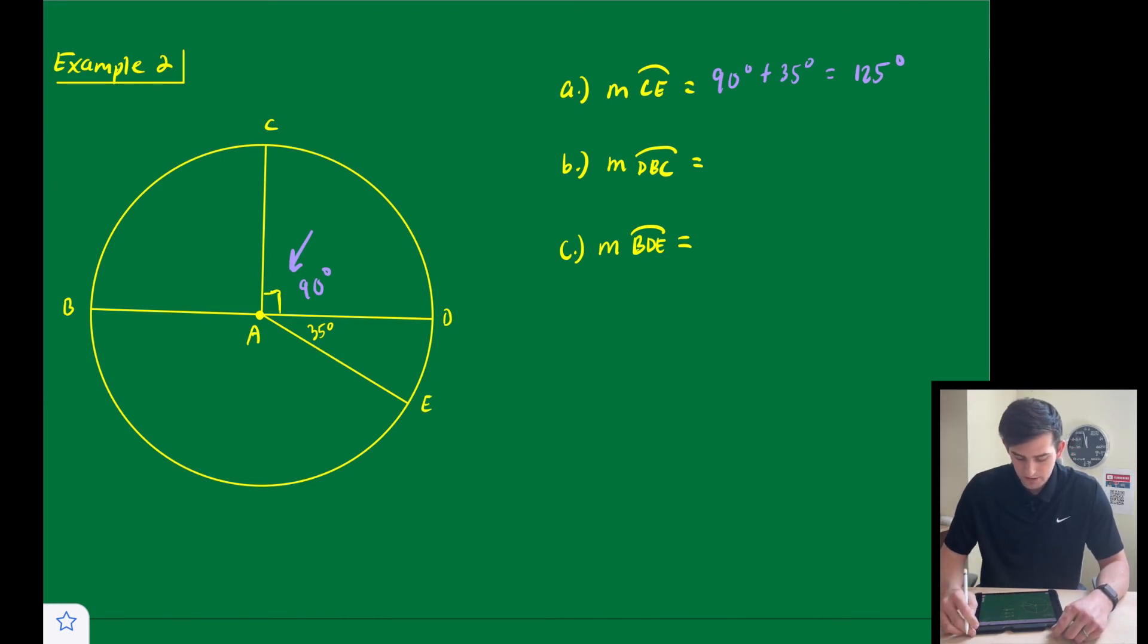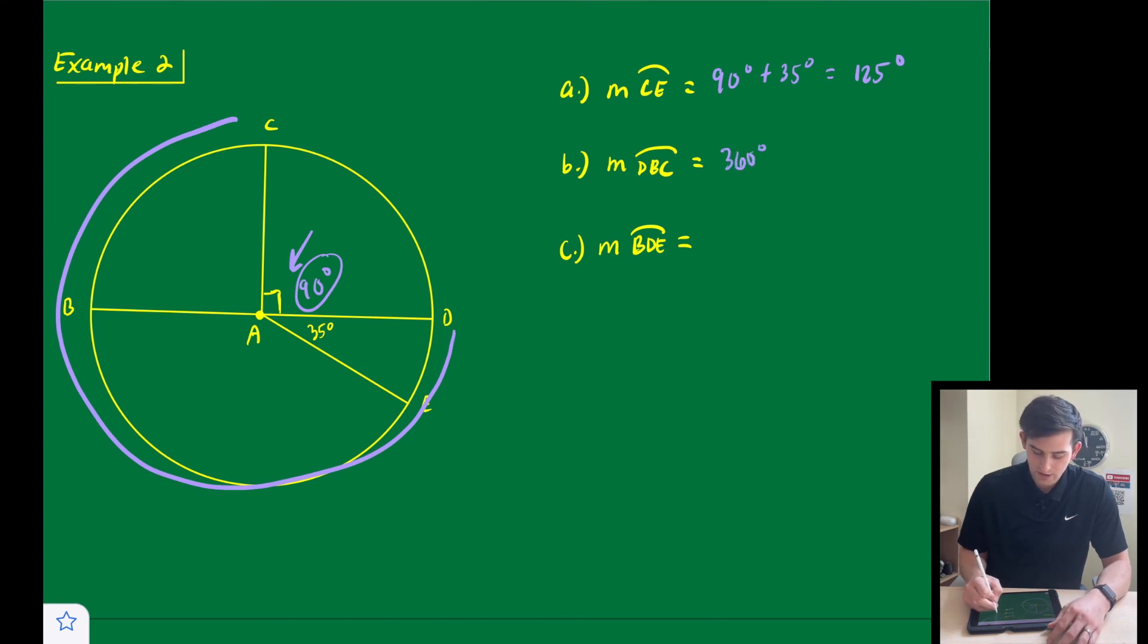And the next one, the measure of major arc DBC. So if we notice, we had this 90 degree angle right here, so we could take 360, which would be our entire circle, and subtract 90 degrees to get a major arc measure of 270 degrees.